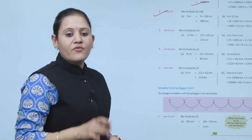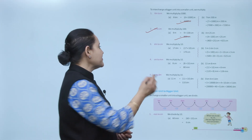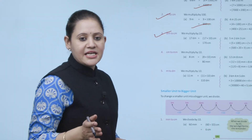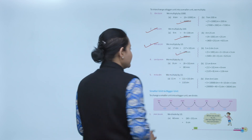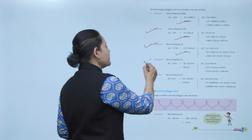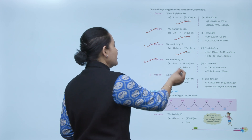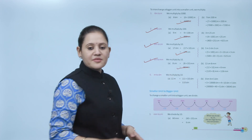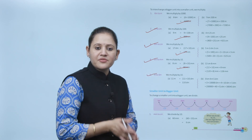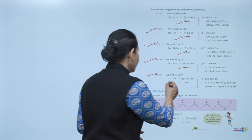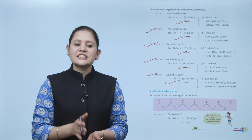One meter equals 100 centimeters, so multiply by 100. Nine meters equals 900 centimeters. Next, decimeter to centimeter: multiply by 10, so 17 decimeters equals 170 centimeters. Centimeter to millimeter: multiply by 10, so 8 centimeters equals 80 millimeters. Next, meter to decimeter: multiply by 10, so 11 meters equals 110 decimeters. This is how we convert bigger units into smaller units.